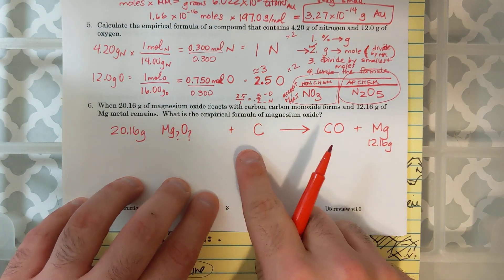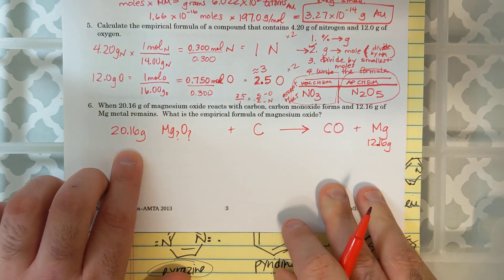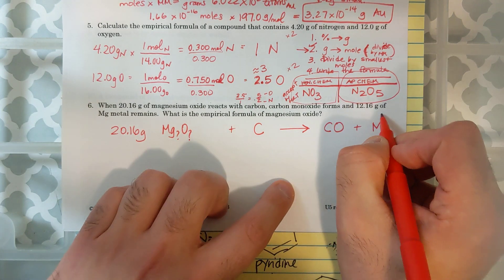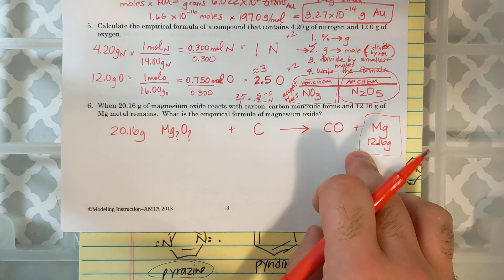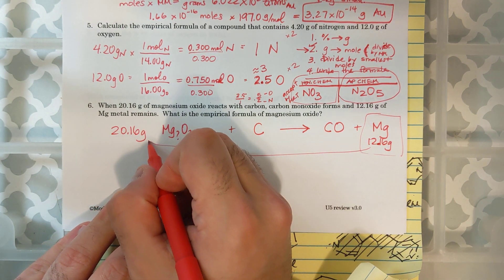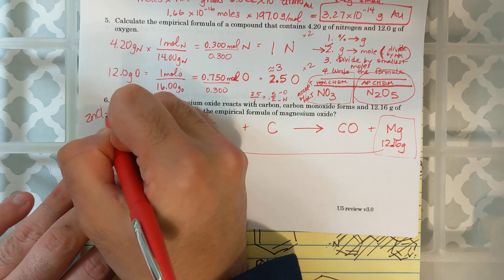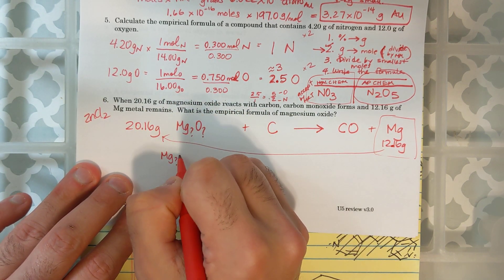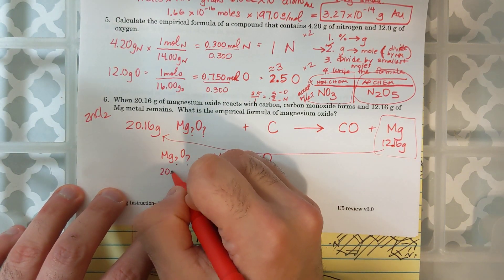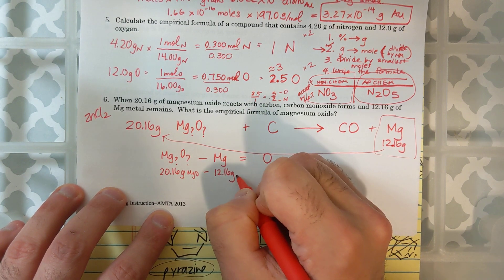Now, that means this compound must have had 12.16 grams of magnesium. Conservation of matter says if I react this compound with another compound and I get carbon monoxide and all of my magnesium now has been thrown out or reacted, this 12.16 grams must have been in the 20.16 grams. And this is just like the zinc chloride calculations. If I do MgO minus the mass of Mg, I'll get the mass of O that's in this compound.